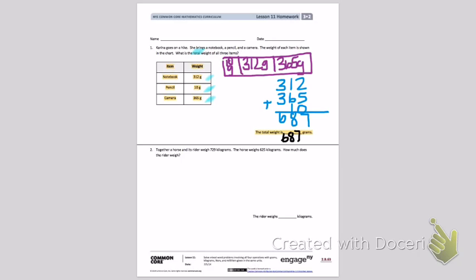Number two. Together, a horse and its rider weigh 729 kilograms. The horse weighs 625 kilograms. How much does the rider weigh? So information that we know: together, the horse and the rider weigh 729 kilograms. We know the horse by itself weighs 625 kilograms. We want to know how much the rider weighs.